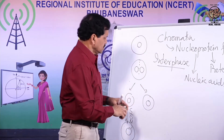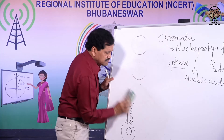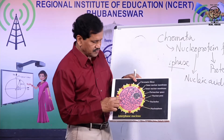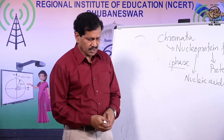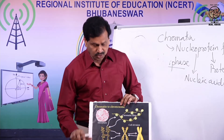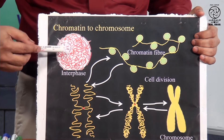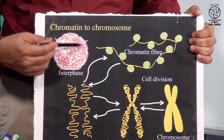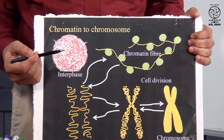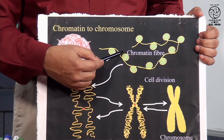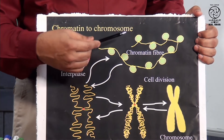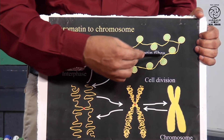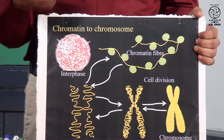During interphase, the chromatin fibers are in the form of thin thread-like structures. If you look at this picture, this is an interphase nucleus, and inside it are present thin thread-like structures called chromatin fibers. The chromatin fibers appear as beaded thread-like structures — they have bead-like structures called nucleosomes, which you will study in class 12.